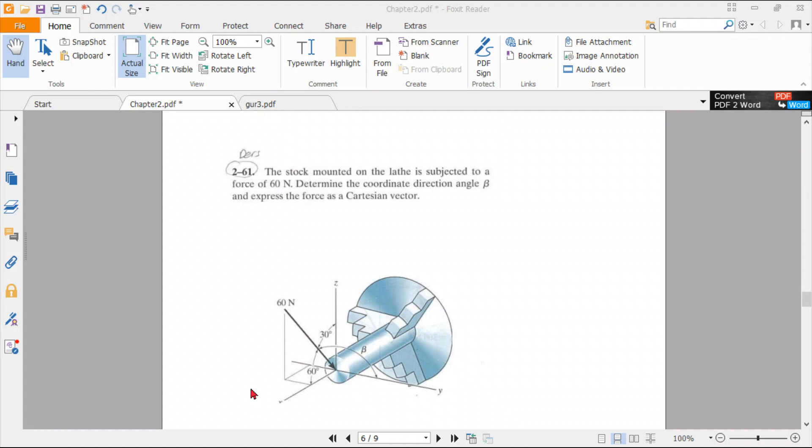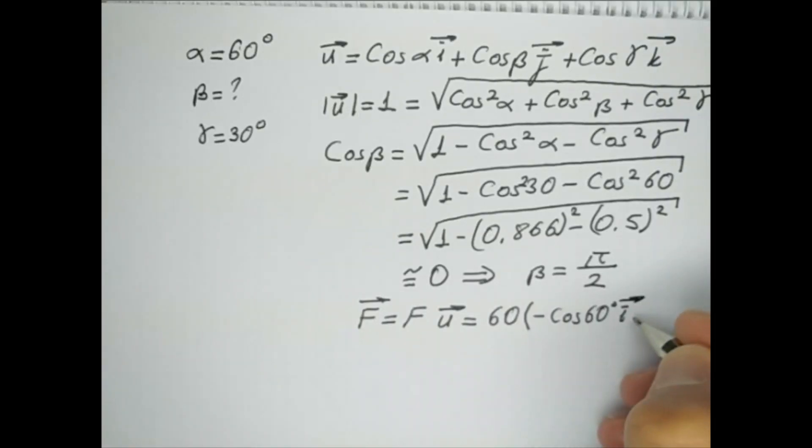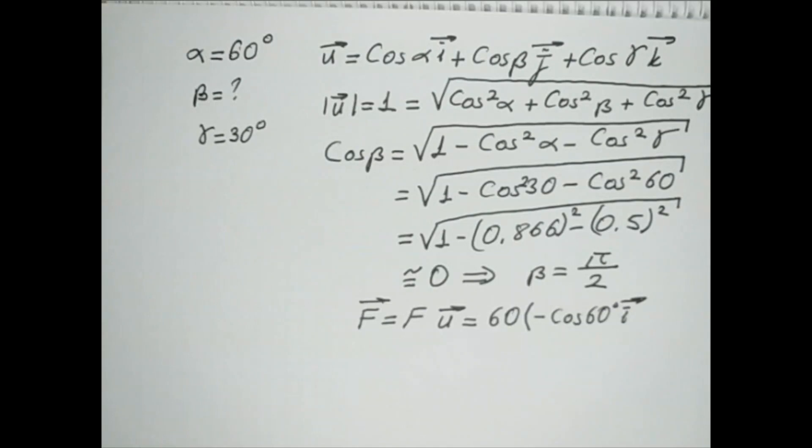Ah no. Alpha is 60 degrees. Sorry. Cosine is 60. I vector. Minus, again, we have negative in z direction. Minus cosine 30, k vector.